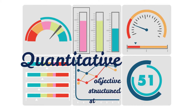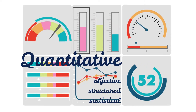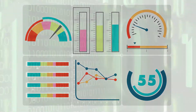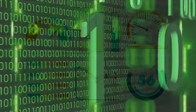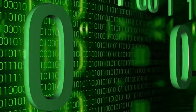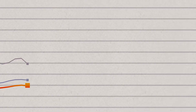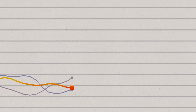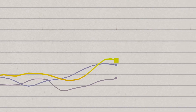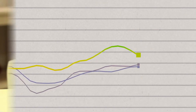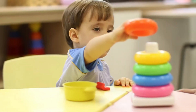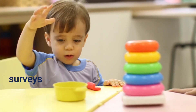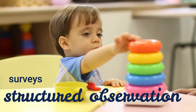Quantitative research is objective, structured, and statistical. Quantitative data is numbers. It provides support when you need to draw conclusions from your research, but it doesn't require personalized interpretation. To give an example, you can use surveys and structured observation.